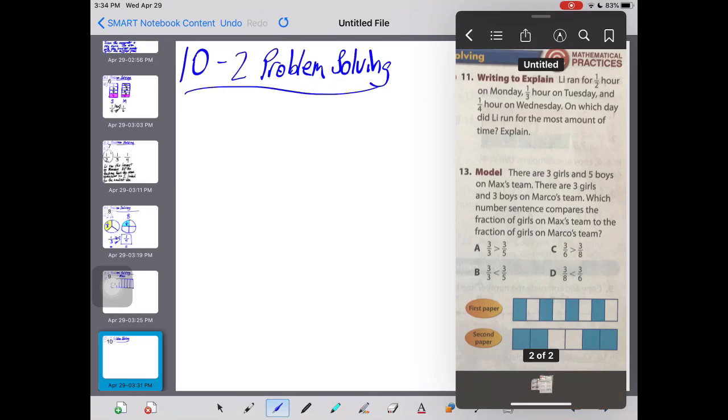Let's take a look at number 13 now. It says that there are three girls and five boys on Max's team. There are three girls and three boys on Marco's team. Which number sentence compares the fraction of girls on Max's team to the fraction of girls on Marco's team?